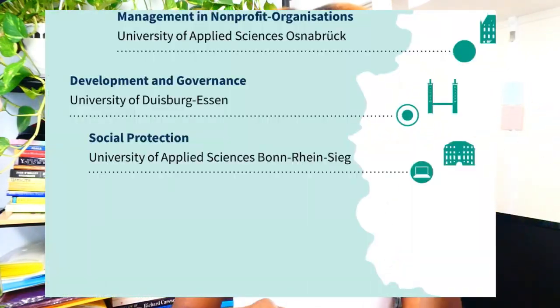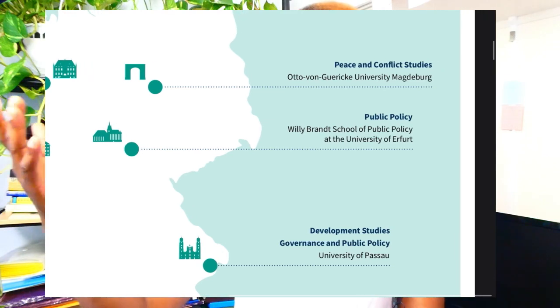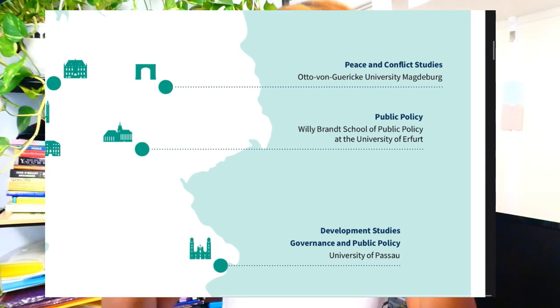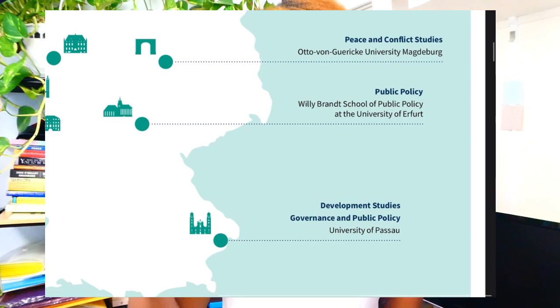Social Protection is offered at the University of Applied Sciences. On the other side, we have Peace and Conflict Studies at Otto von Guericke University, Magdeburg. So if you are studying conflict studies or Peace and Conflict Studies, you can definitely apply for this.